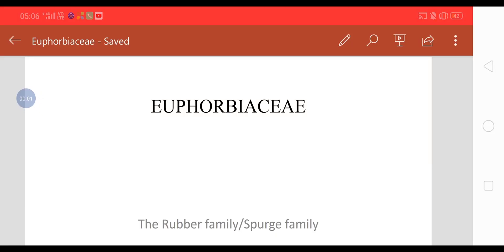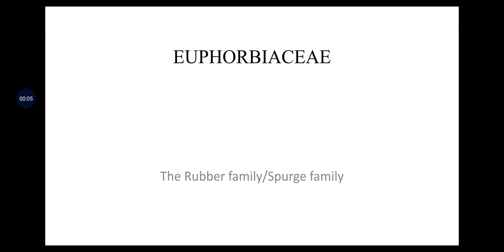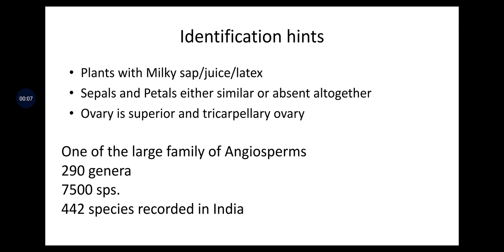Euphorbiaceae family is commonly known as the rubber family. The identification hints of this family are plants with milky sap, juice or latex, sepals and petals either similar or absent altogether. The ovary is superior and tricarpillary. It is one of the largest families of angiosperms with 290 genera and 7,500 species, and 442 species are recorded in India.